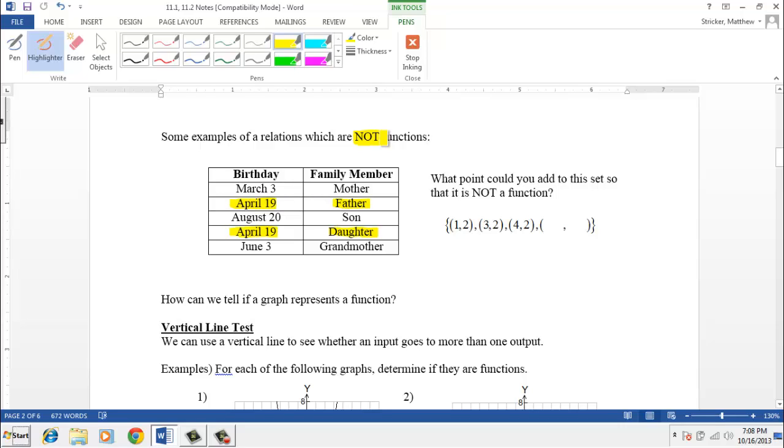So see if you can come up with on your own, maybe a point here that would make this particular set of points not a function. One that I might pick might be maybe three and four, because we already know that three goes to two. So if three goes to two and three also goes to four, that makes this not a function.